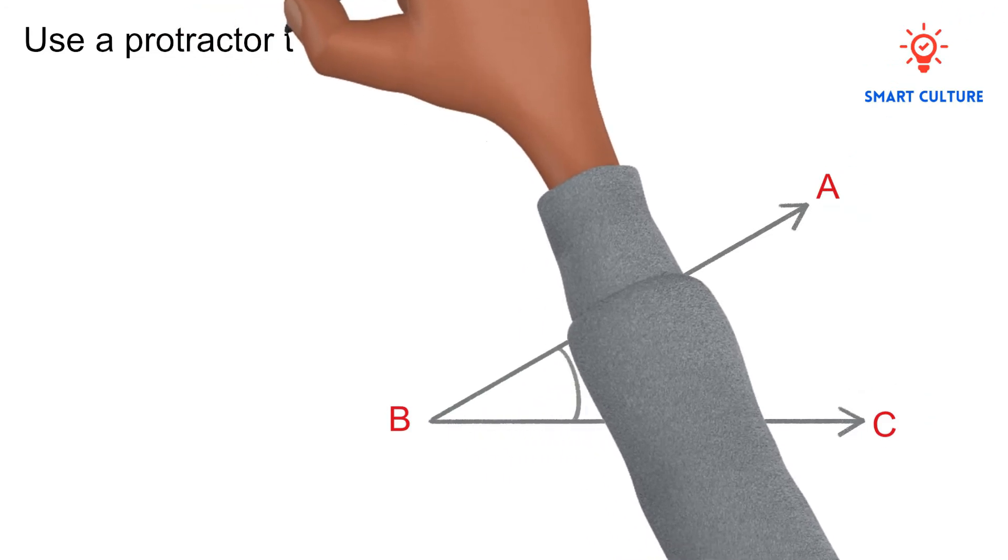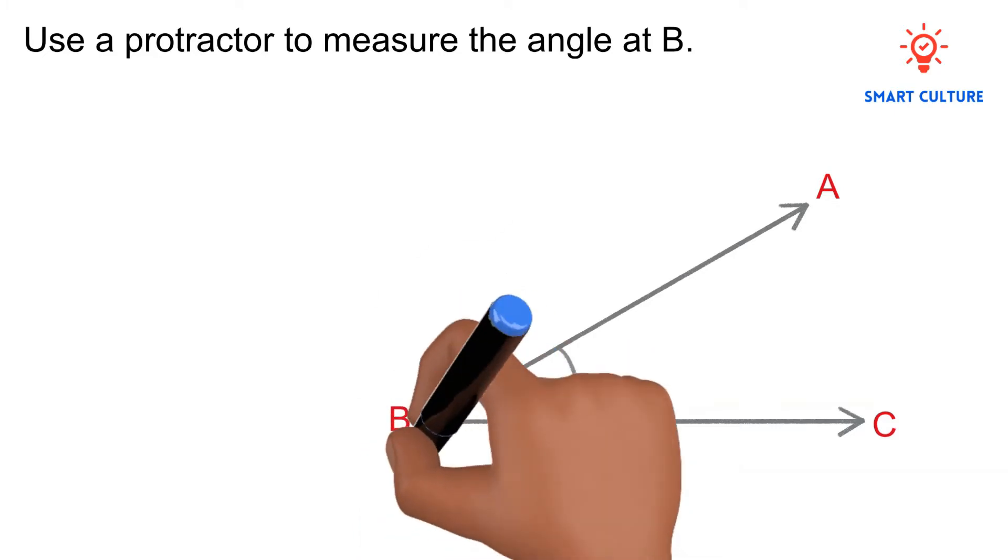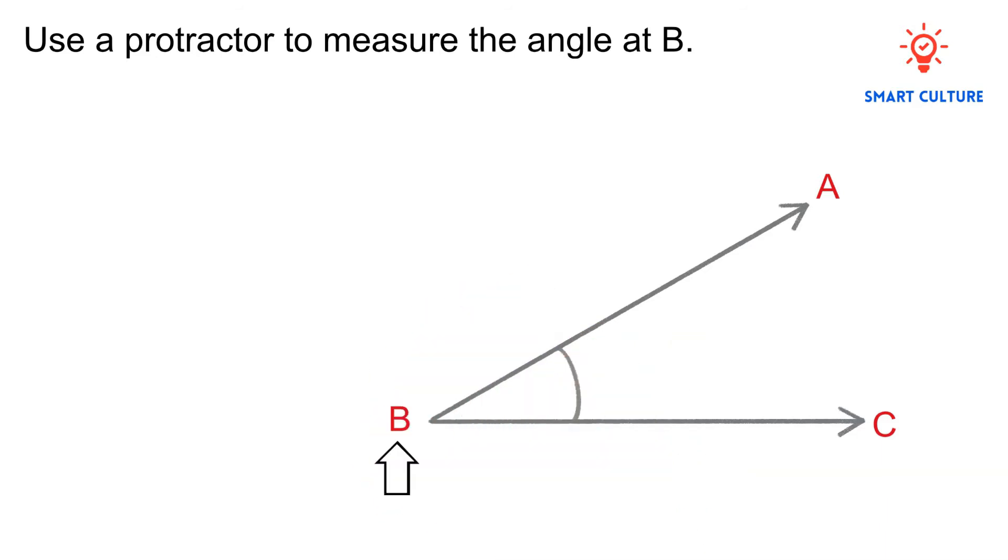Use a protractor to measure the angle at B. So the first step will be to find the vertex of the angle. This is the point at B where the two arms meet. Carefully place the protractor so that its center, the origin, is positioned on the vertex B.